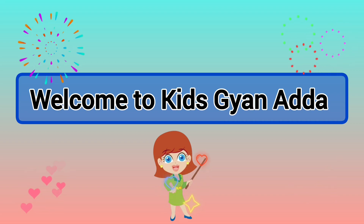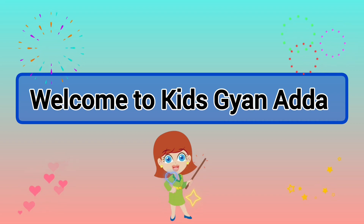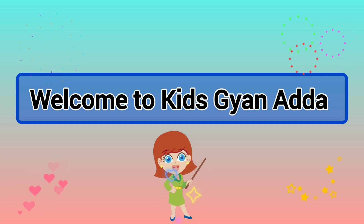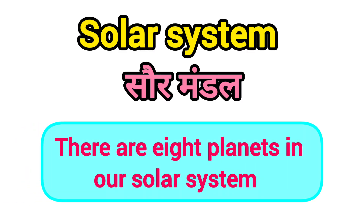Hello kids, how are you? Welcome to Kids Gyan Adda. Today we are going to learn about the solar system, means Saurimandal. So kids, do you know there are 8 planets in our solar system? So let's discuss.